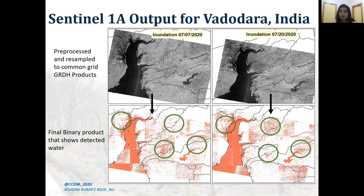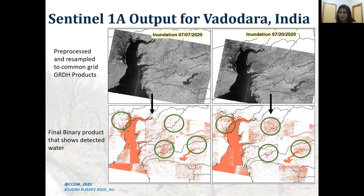This is the inundation output from SAR images targeting Vadodara, India, as a case study for July 7th and July 20th, 2020. The upper images are the preprocessed and resampled GRDH products on a common grid, and the images below are the final binary products showing water only. If closely observed, the change in inundation can be noticed in the latter date in the circled areas.